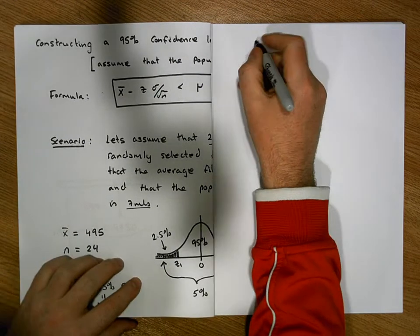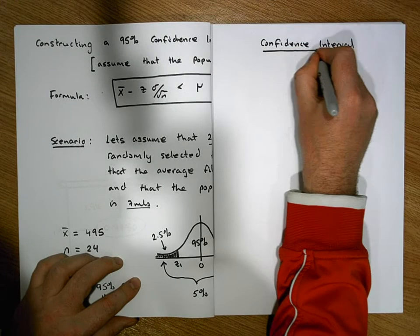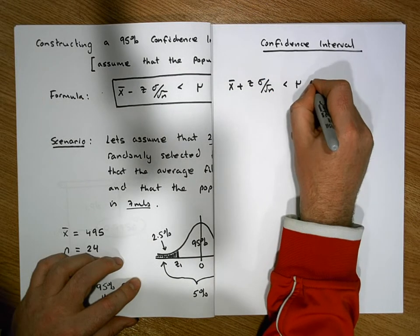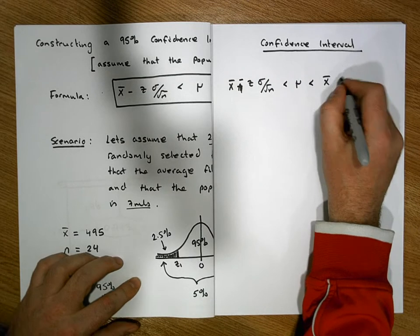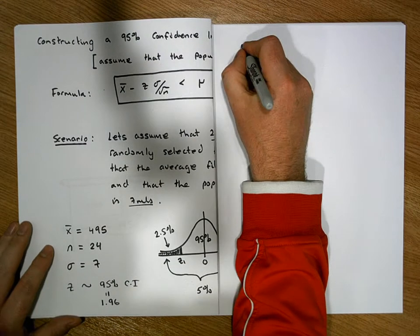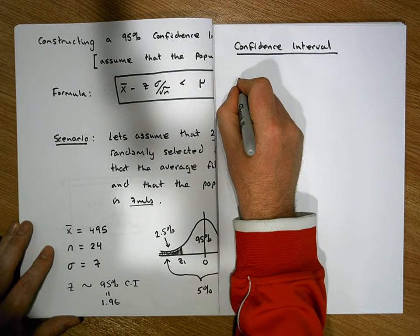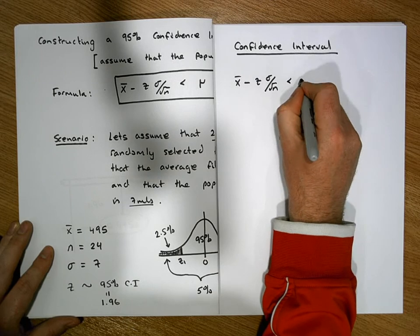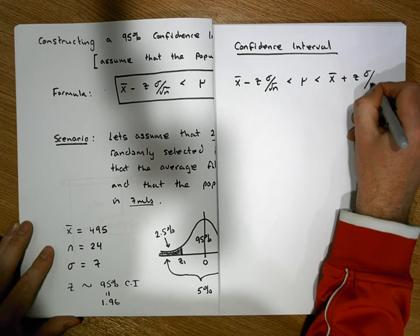Let's keep in mind our formula again. The confidence interval formula says: x-bar minus z times sigma over the square root of n must be less than the population mean mu, which must be less than x-bar plus z times sigma over the square root of n. We now know all of these values — identified from the scenario and from calculating the appropriate z score for a 95% confidence interval.